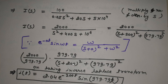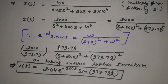Comparing with the standard form, A = 200 and ω = 979.79. Since ω = 979.79 must appear in the numerator, I multiply and divide the expression by 979.79 to get 979.79 in the numerator. Solving 2000/979.79 gives approximately 2.04. Therefore, taking the inverse Laplace transform, I(t) = 2.04 · e^(−200t) · sin(979.79t). This is the time-domain current asked for in the question.